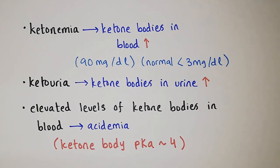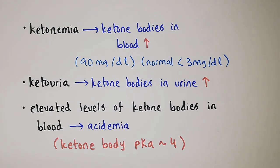If ketone bodies increase in blood, they will also increase in urine — this is called ketonuria. These elevated levels of ketone bodies in the blood lead to acidemia. Ketone bodies are acidic, having a pKa of approximately 4, and they are easily ionized, which means they readily give away their protons. This lowers the pH of blood and leads to acidemia.